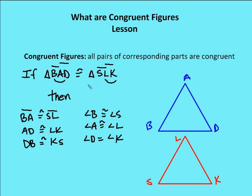Now, if those parts were congruent, I would not be able to say that, assuming that we weren't dealing with an equilateral triangle, I would not be able to say that triangle BAD was congruent to triangle LKS. So order matters in the way that you identify the triangle and the congruency between the two corresponding triangles. So again, it's BA congruent to SL, AD congruent to LK, DB congruent to KS.